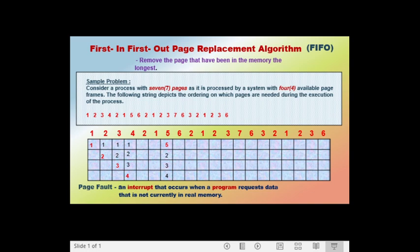The next page called is page 6. The frames contain pages 5, 2, 3, and 4. Page 6 is not in the frame, causing one page fault. We need to swap out a page; from among pages 5, 2, 3, and 4, it is page 2 that has been in memory the longest. Page 2 is swapped out and page 6 is swapped in, causing one page fault.